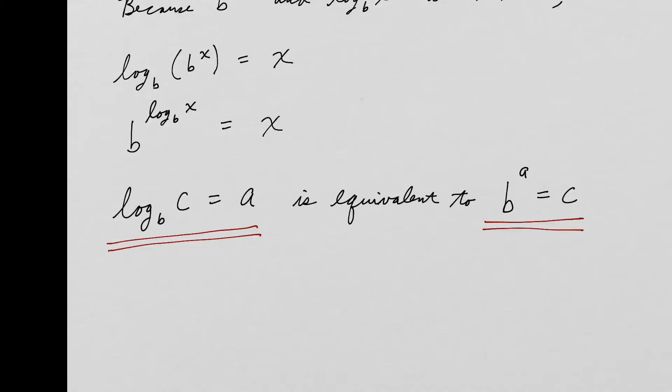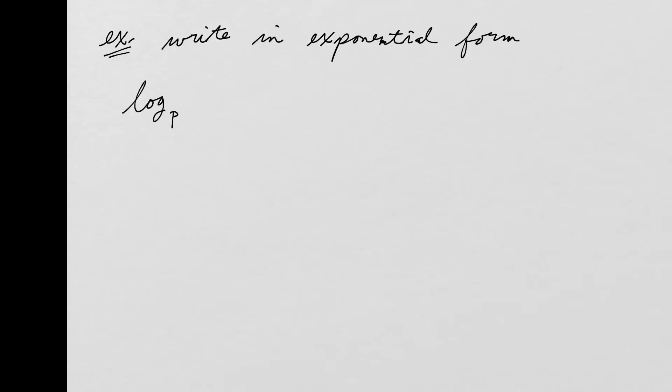For example, if we're asked to write in exponential form: log base P of Z equals U, I start with the base P, and the exponent is the answer to the log — that's U — and that equals Z. Another one: log base 3 of T equals K becomes 3 to the K equals T.